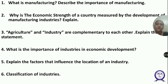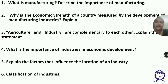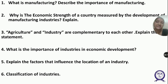On the basis of source of raw material, industries are classified as agro-based and mineral-based. Agro-based industries include cotton, woolen, jute, silk textiles, rubber, sugar, tea, coffee, and edible oil — all getting raw material from agriculture. Mineral-based industries include iron and steel, cement, aluminium, machine tools, and petrochemicals, which get raw material from minerals.